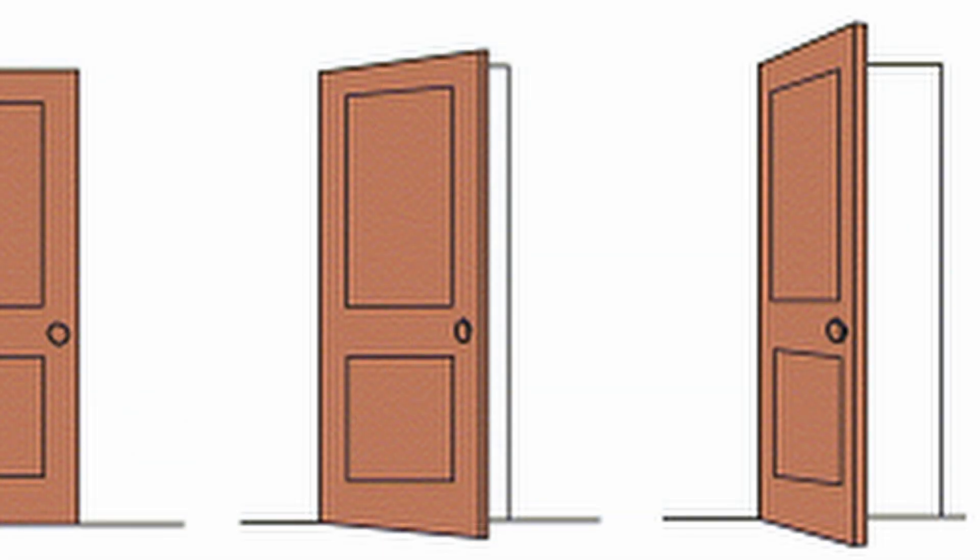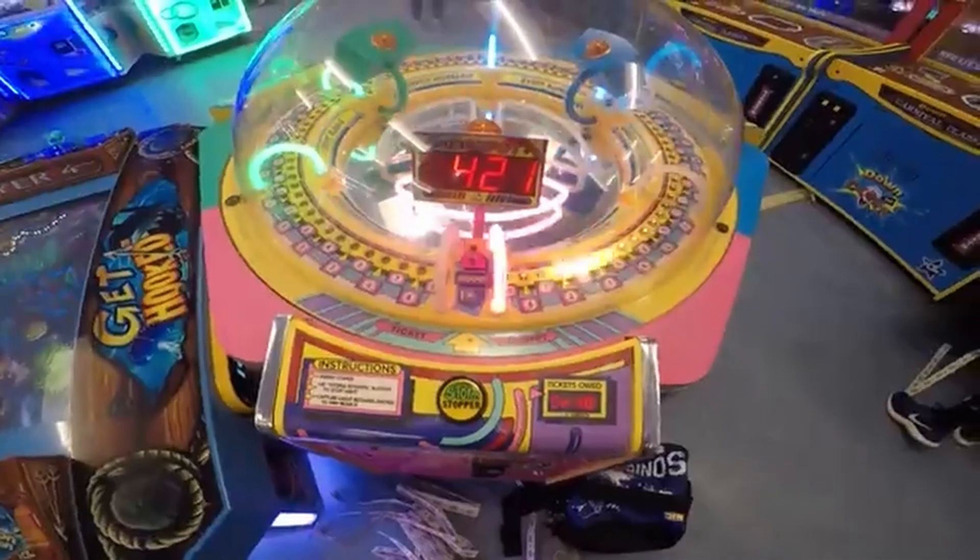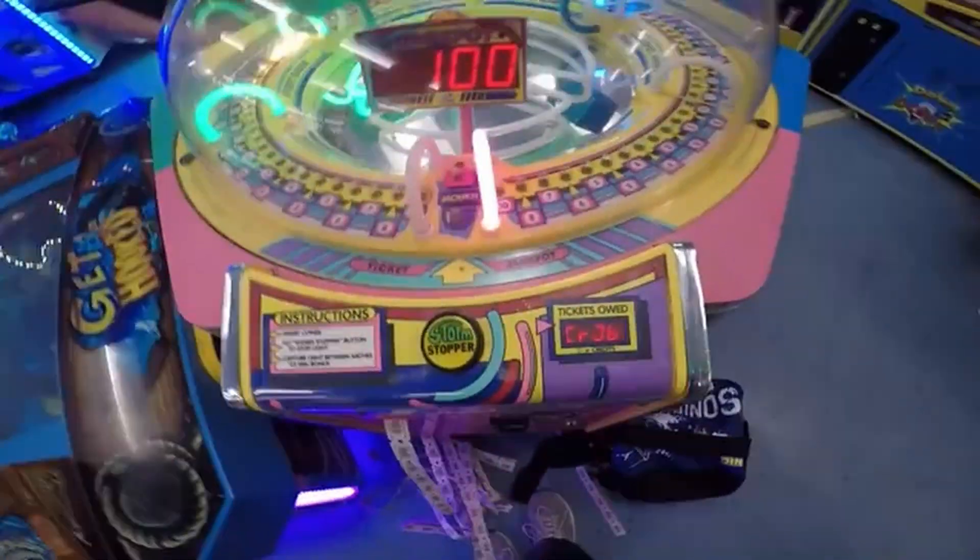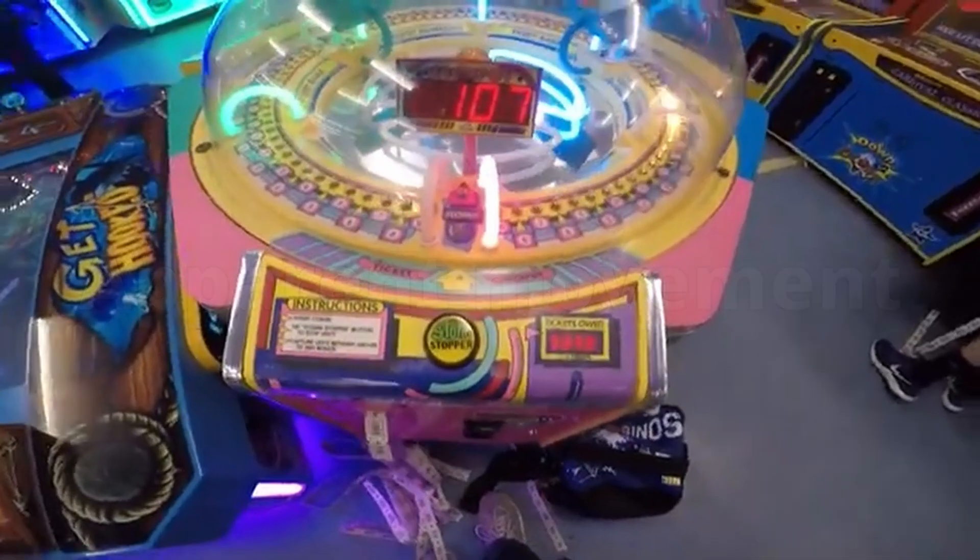Notice how in this image, despite the door being open, you still know it is a door and the same as the first image. This is called perceptual constancy. You know this game at arcades? It makes you think a light is moving in a circle, when in actuality lights are just turning on and off. This is known as apparent movement.